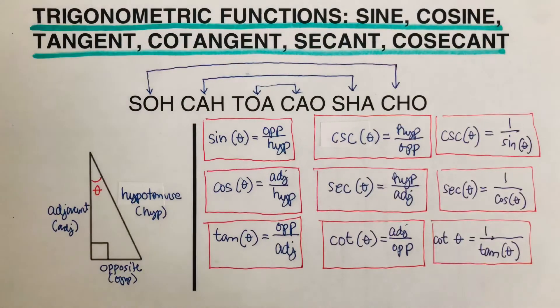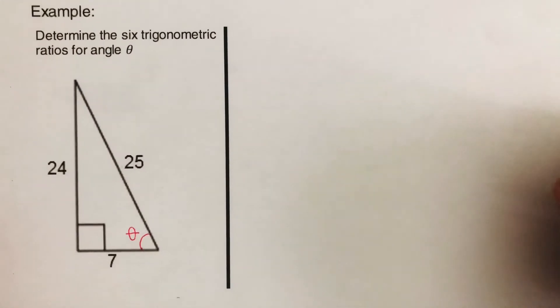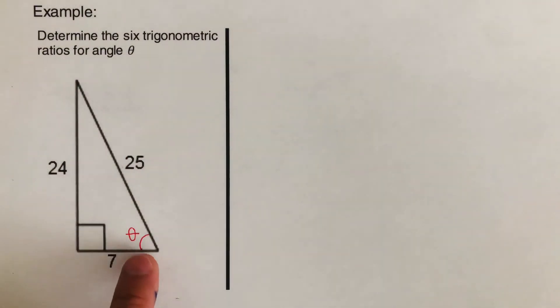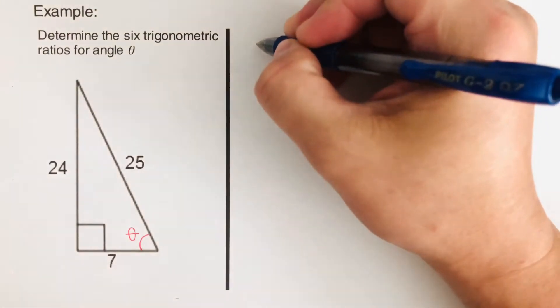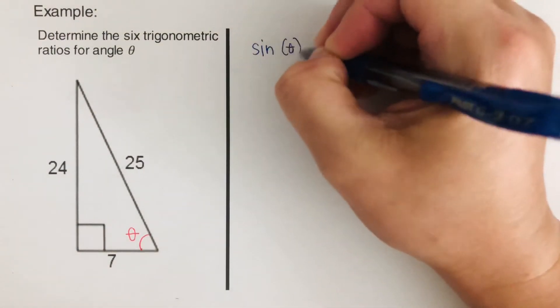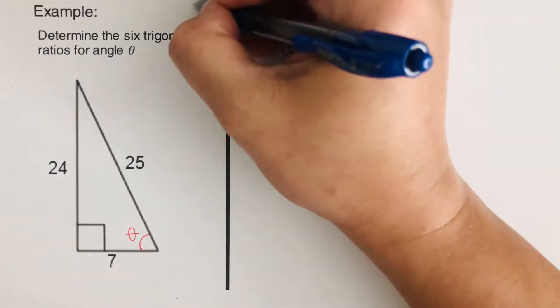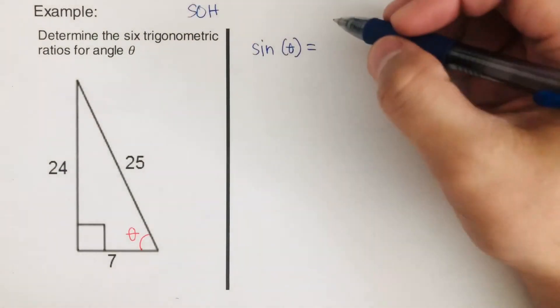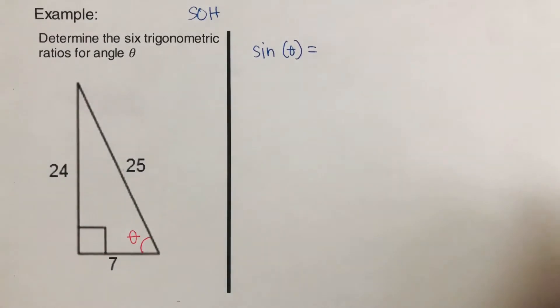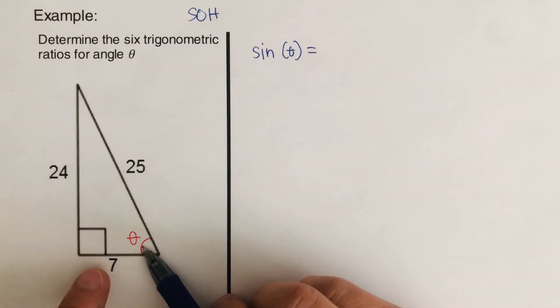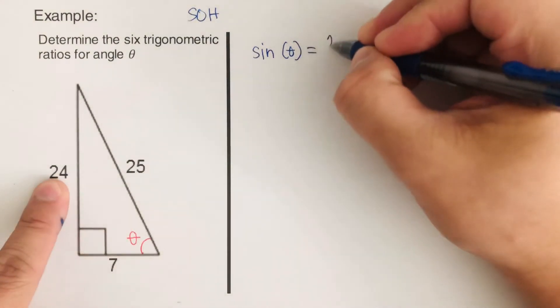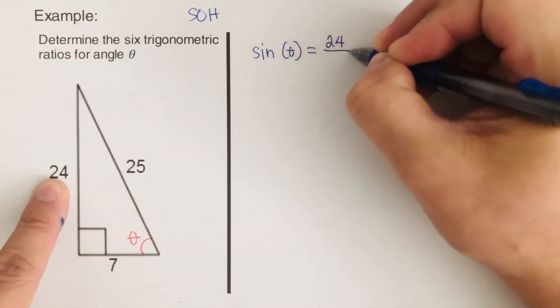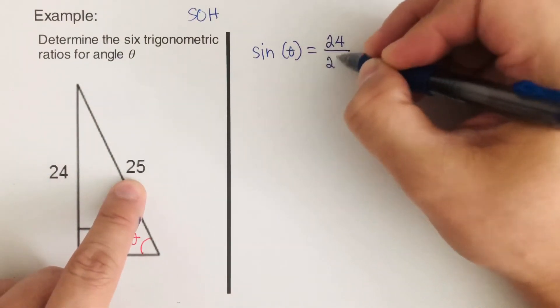Now let's have some examples. We have a triangle and we are supposed to determine the six trigonometric ratios for the given angle theta. Starting with sine theta — remember it's SOH, so that would be opposite over hypotenuse. The opposite of this angle is 24, so I can write 24 over the hypotenuse which is 25. So sine theta equals 24 over 25.